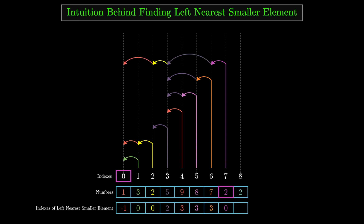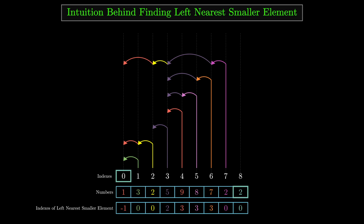For the last 2 at index 8, the left nearest index is 7, and element at index 7 is 2, which equals 2 and cannot be the answer. We jump to the LNS index of 2, which is 0. Element at index 0 is 1, less than 2, so the answer for this 2 is index 0. This is how we can find the LNS index of each element using the algorithm.